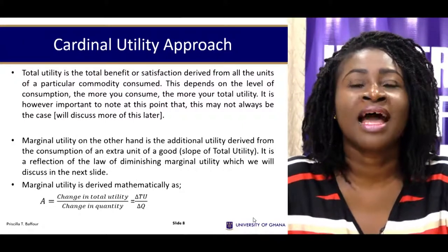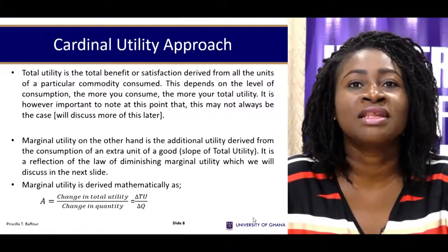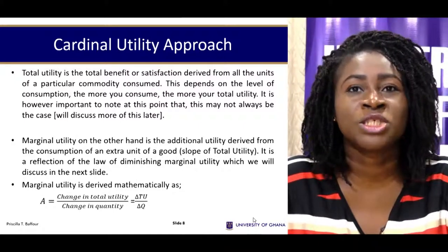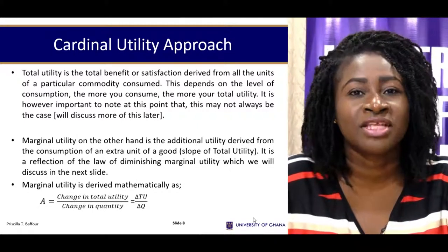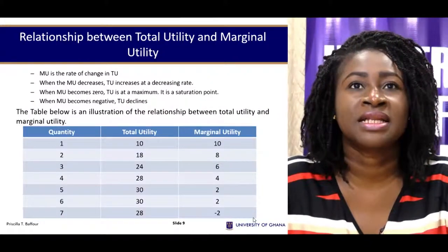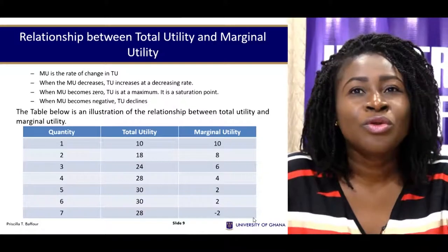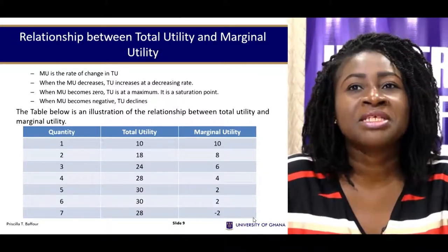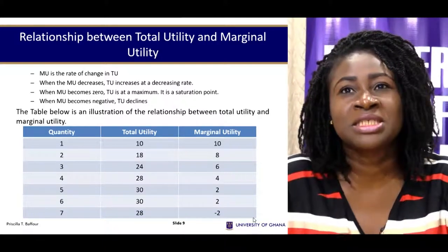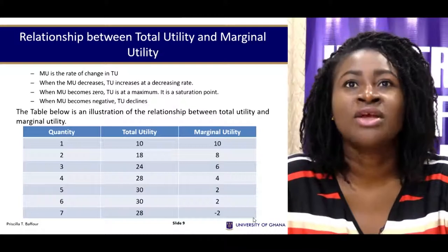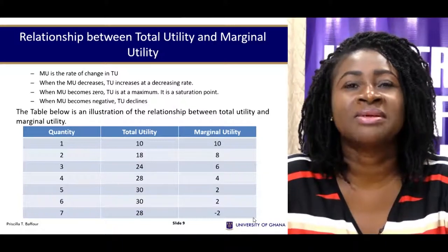Total utility is the total satisfaction you get from consuming a good, and it is additive — the more you consume, the higher your satisfaction in terms of total utility. Marginal utility, on the other hand, is the change in your total utility as a result of a change in your consumption — that is, the additional satisfaction you get from consuming additional units of a good. Marginal utility works by utilizing the concept of diminishing marginal utility: as you consume more of a product, your satisfaction declines.